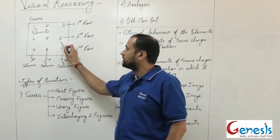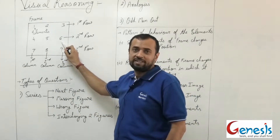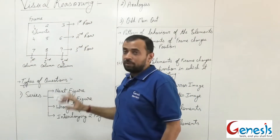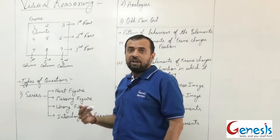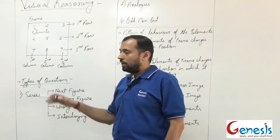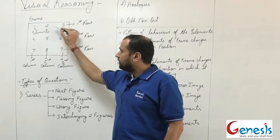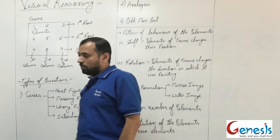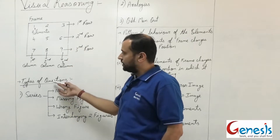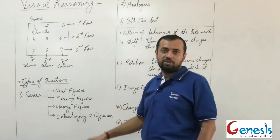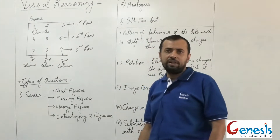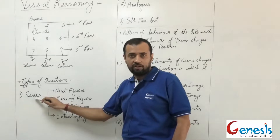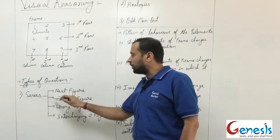Each and every element has its specific name. For example, the sixth element would be called the second row, third column element. When covering questions, I will definitely refer to this terminology, so always remember that the row number and column number specify that element. Now, the types of questions asked under visual reasoning can be broadly classified into three types, the first being series.